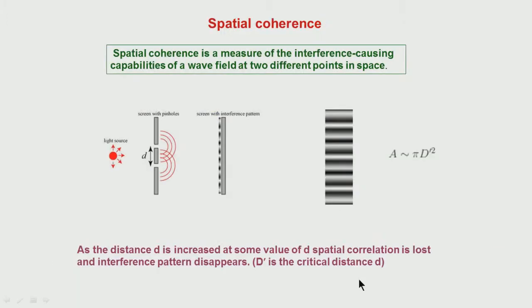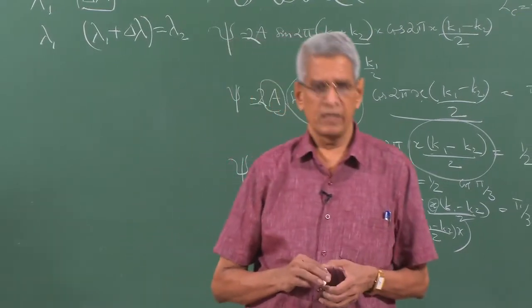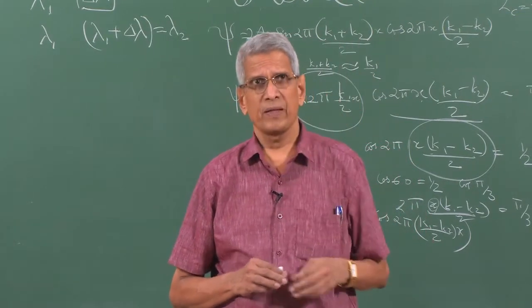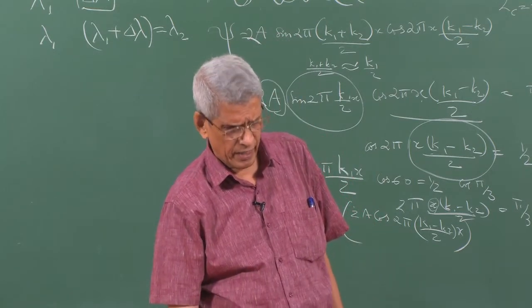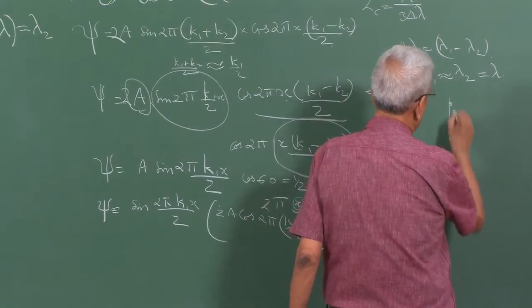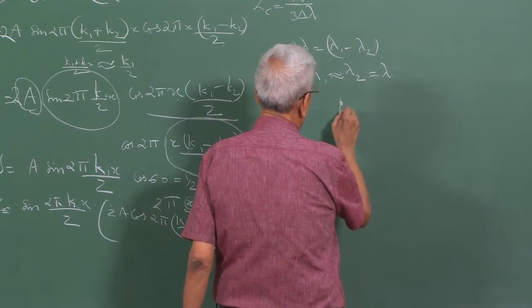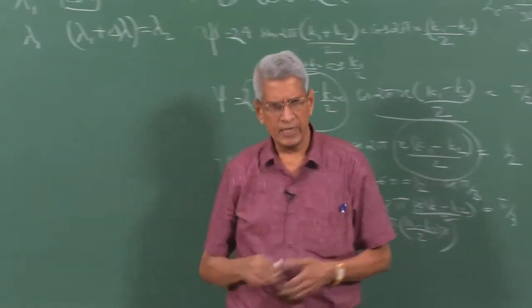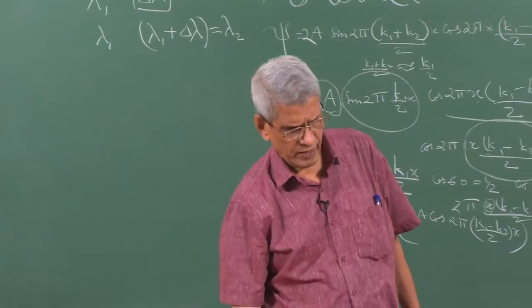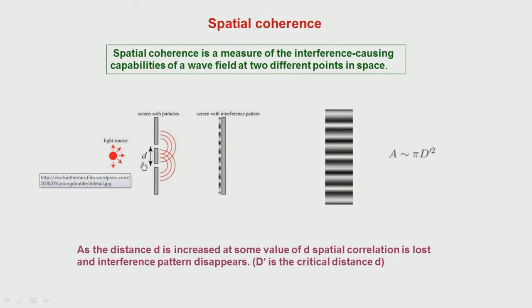Another important aspect, especially important in electron microscopy, is spatial coherence. Spatial coherence concerns whether photons emitted from one particular point and from another particular point on the source are in phase or not. The distance over which spatial coherence can be maintained can be obtained using Young's double slit experiment.